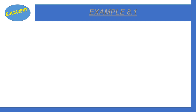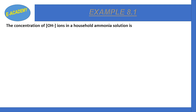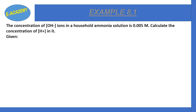Example 8.1: The concentration of OH⁻ ions in a household ammonia solution is 0.005 molar. Calculate the concentration of H⁺ in it. We are given the OH⁻ ion concentration as 0.005 molar, and we need to find the H⁺ ion concentration.